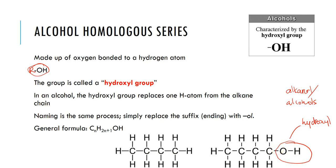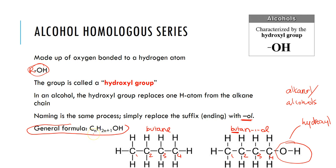When we name these, it's the same process as before for counting carbons and double bonds, but this time we change our suffix to '-ol'. Where this is butane with one, two, three, four carbons, this would now be butan-1-ol — 'but' for four carbons, 'an' for single bonds, and 'ol' — with the number indicating the location of the hydroxyl group. The general formula for an alcohol is CₙH₂ₙ₊₁OH, showing the functional group.